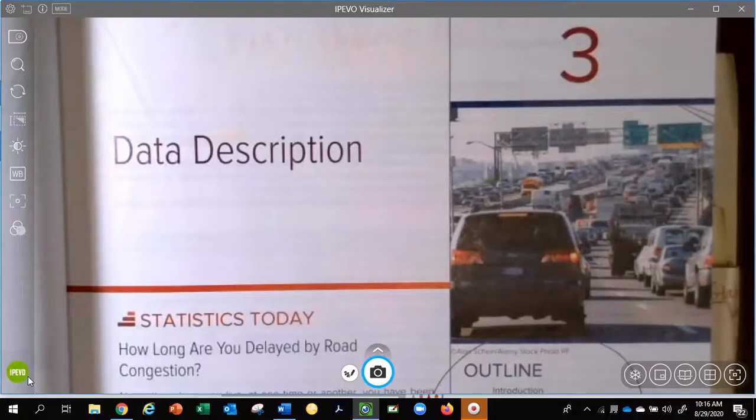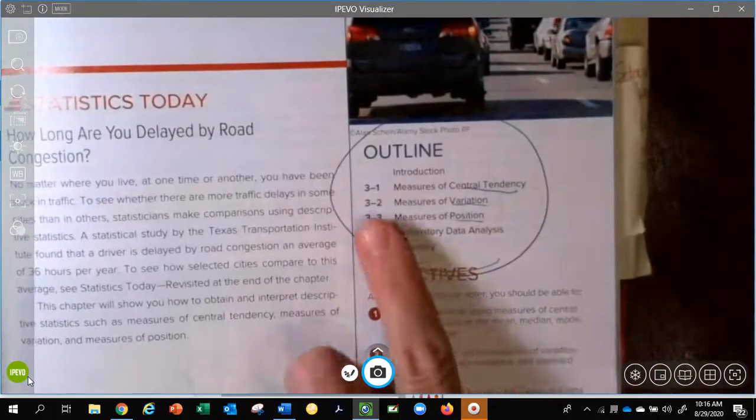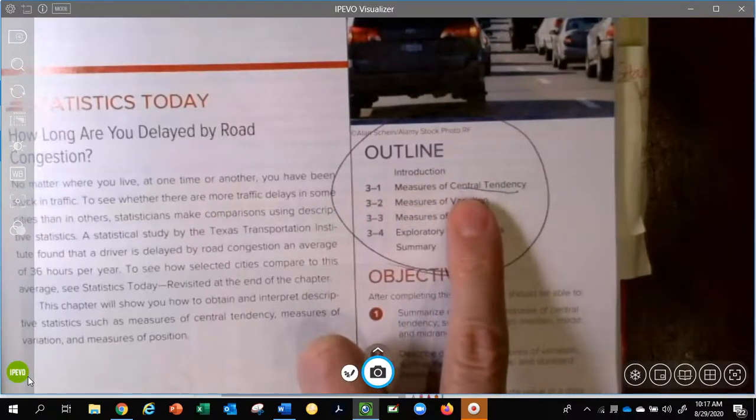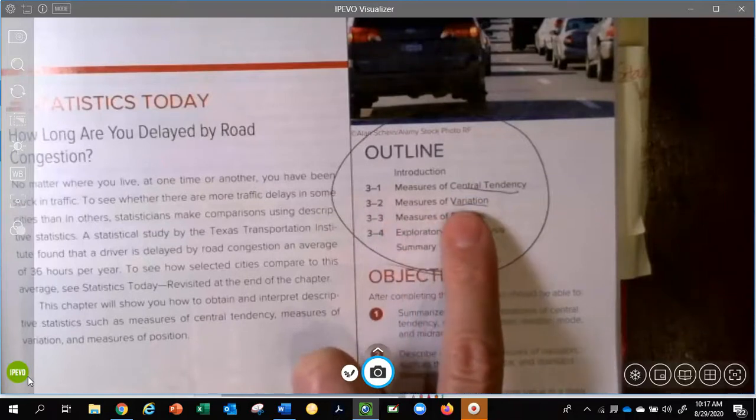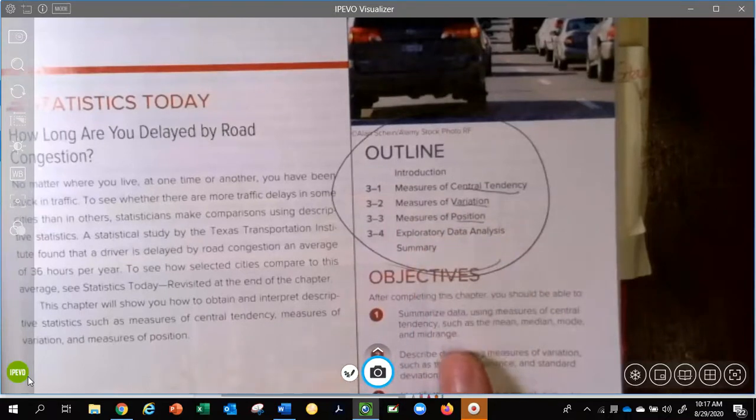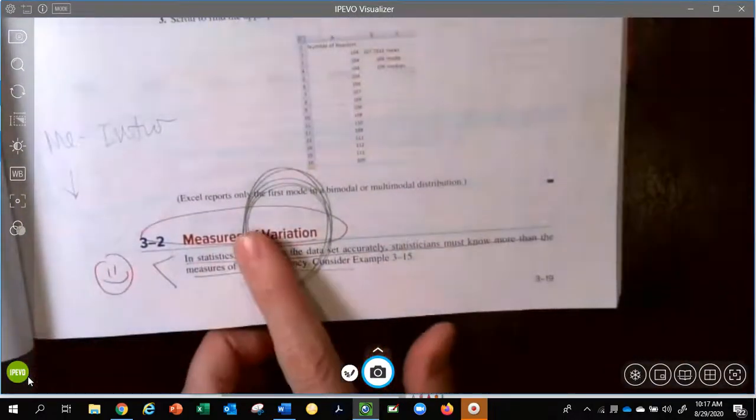We are now in Section 3, Chapter 3, Section 2. I wanted to go back to the start of Chapter 3 and point out that in 3.1 we studied measures of central tendency. We are now going to be looking at measures of variation, and then to point out where we're going, a thing called measures of position and then some exploratory data analysis. Looking at 3-2, it mentions measures of variation.